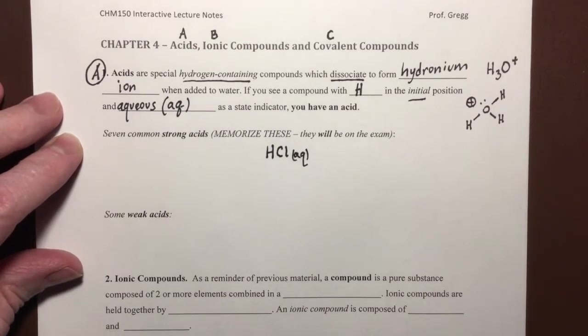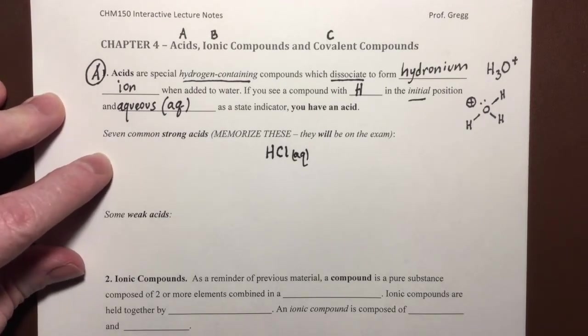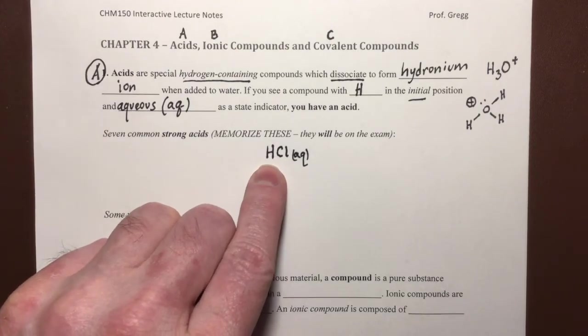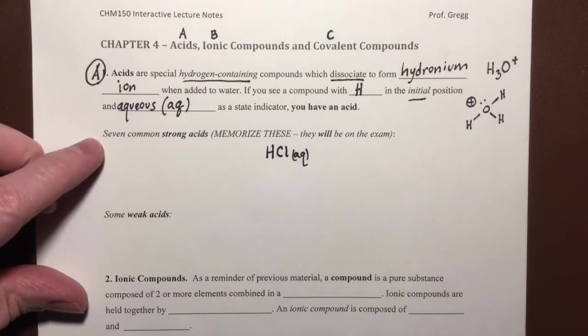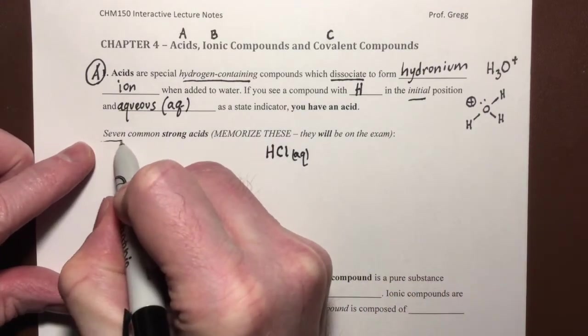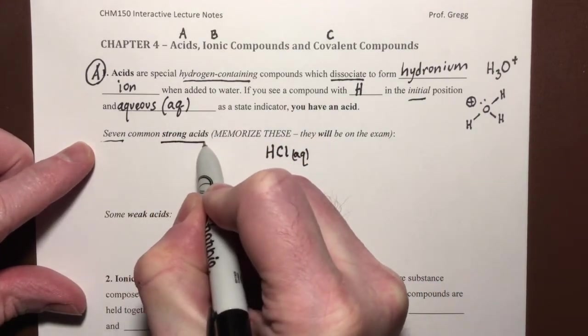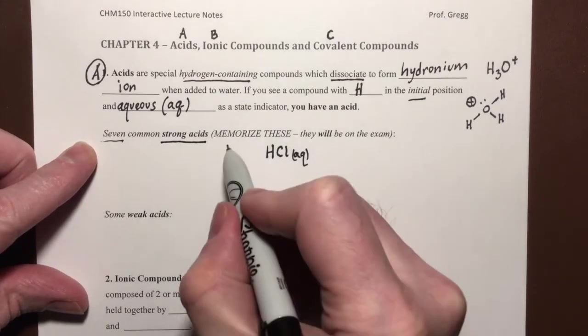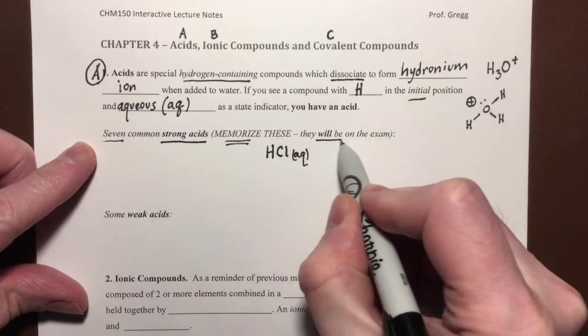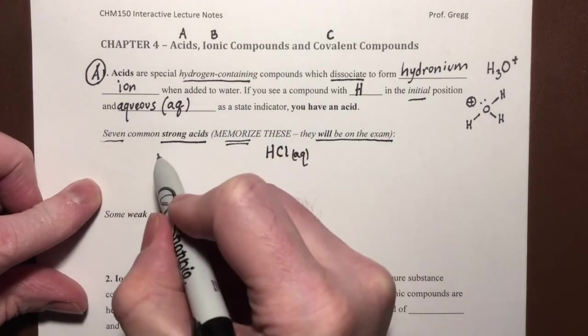Now there are many acids that will, when they are placed in water, dissociate to give up their hydrogen to the water molecule and form hydronium. Seven of them are called strong acids. And we have to memorize these, because they will be on the exam.